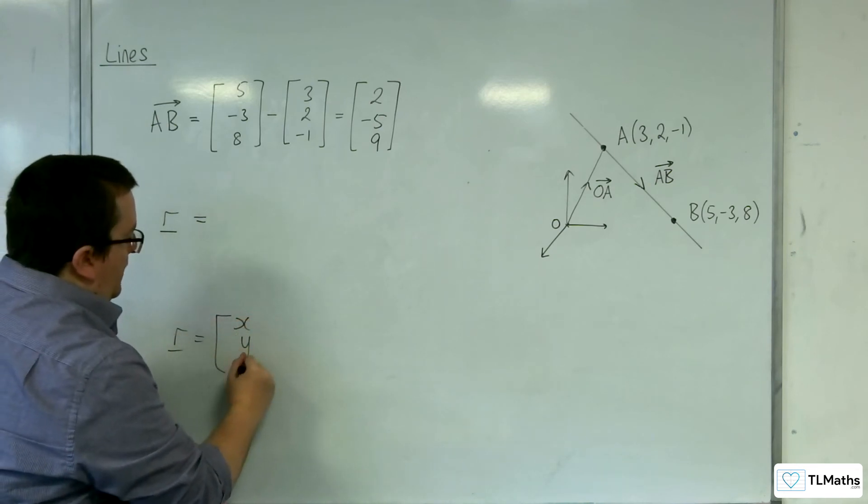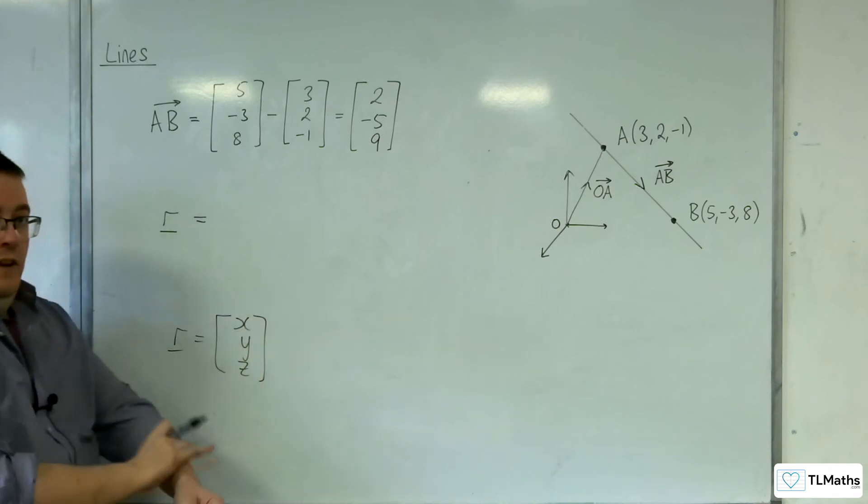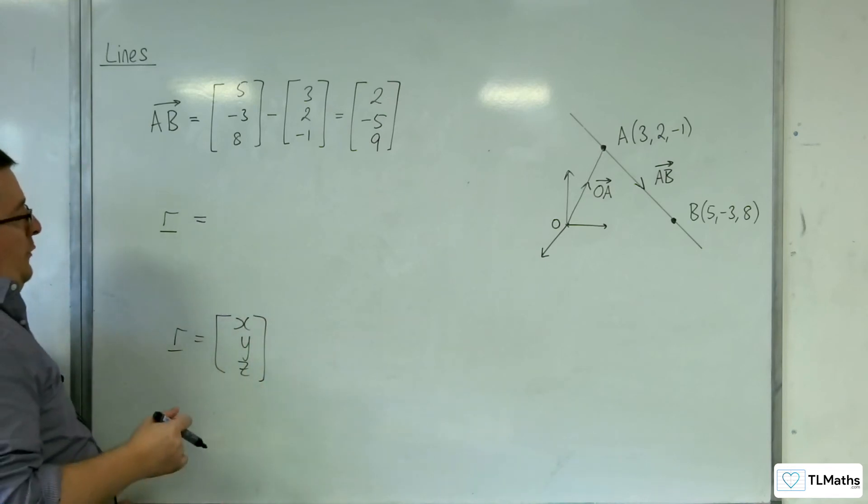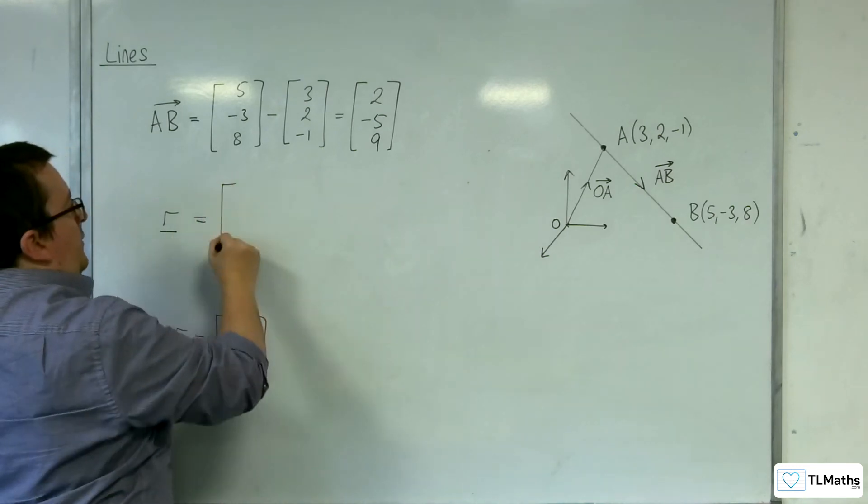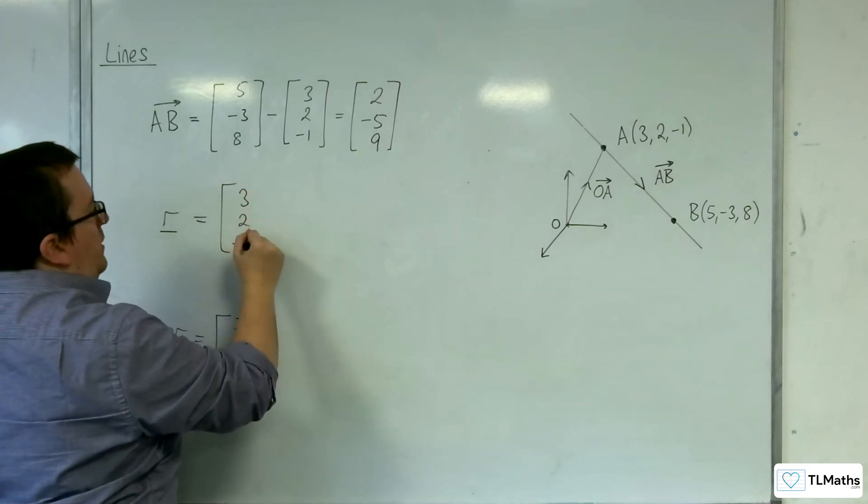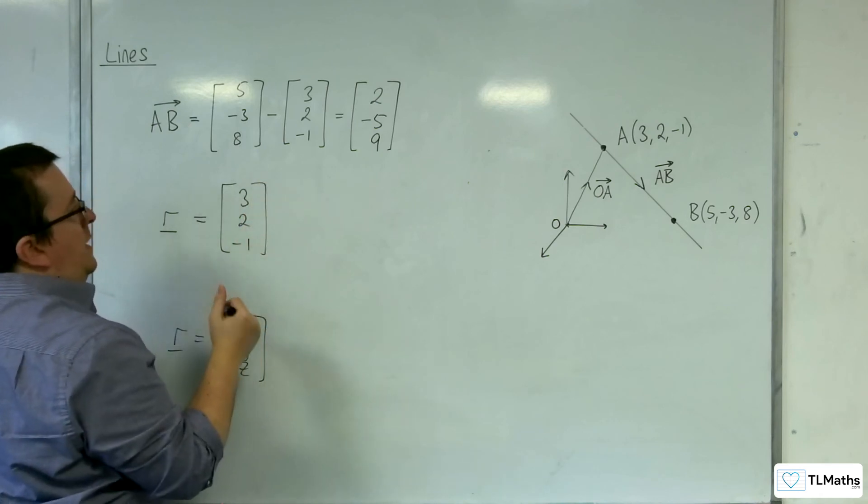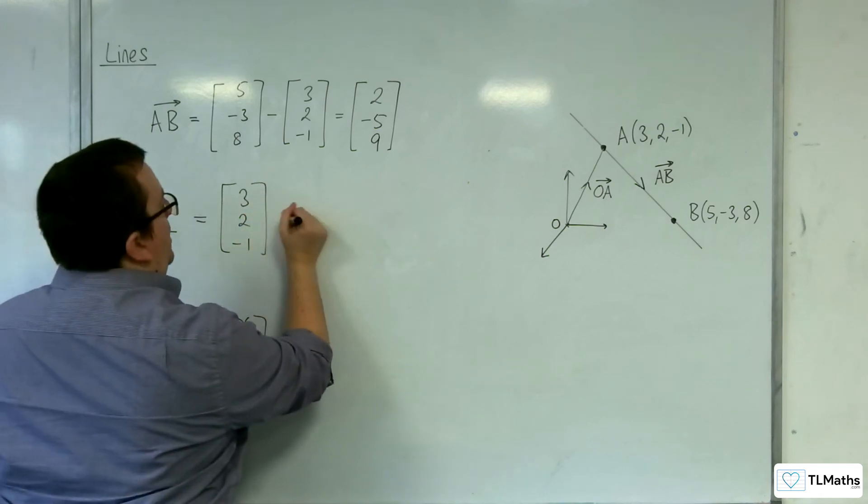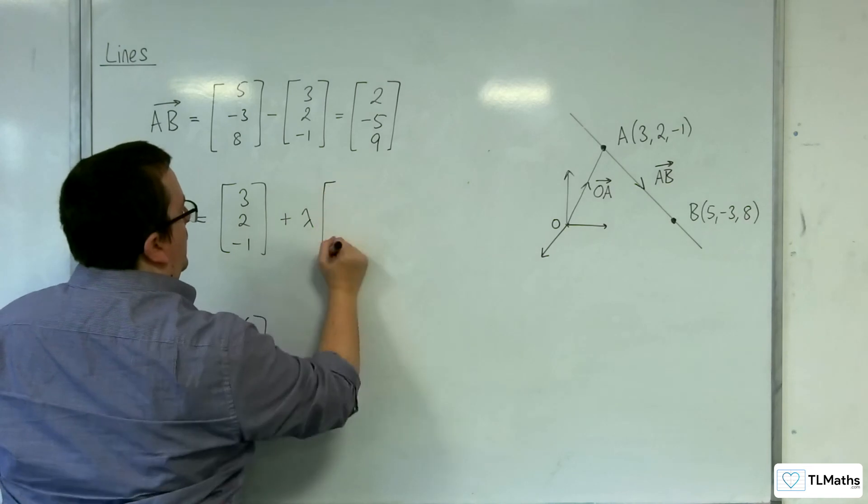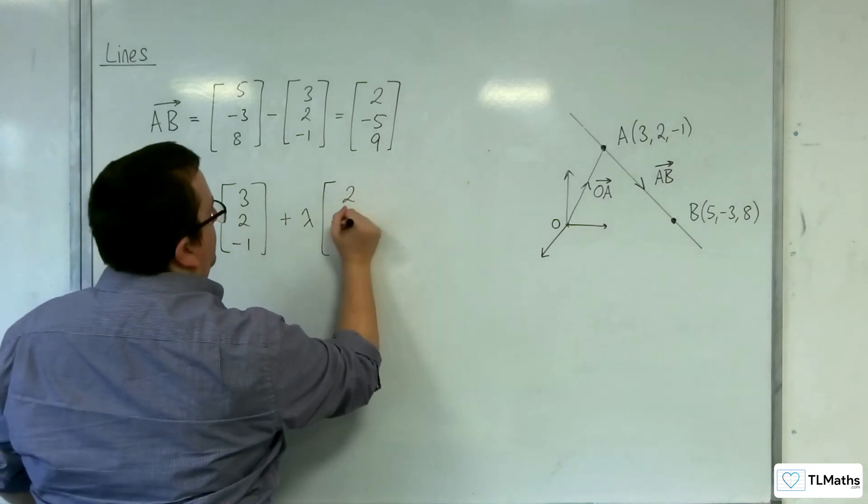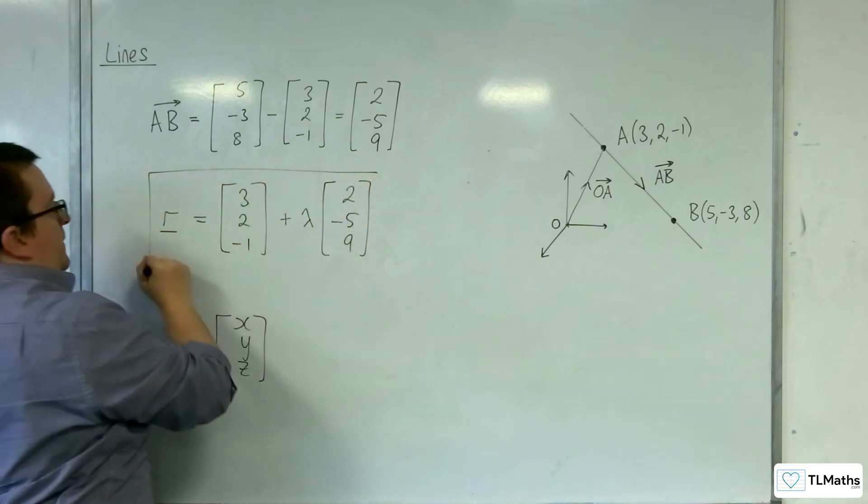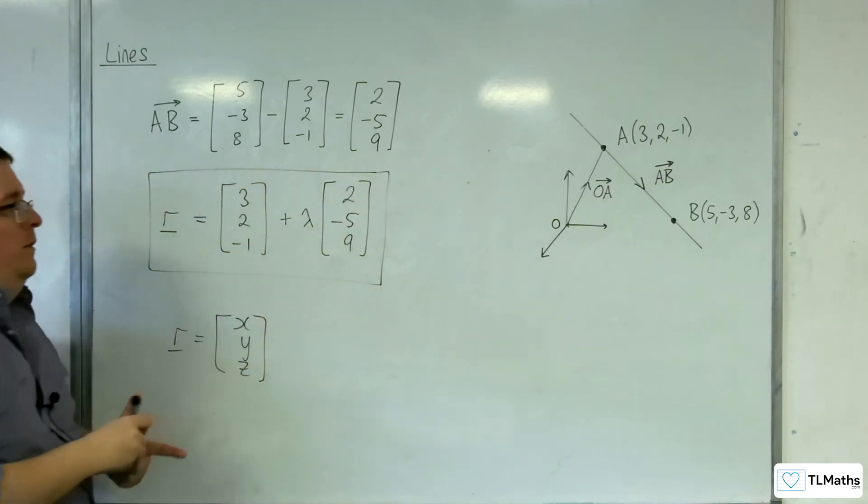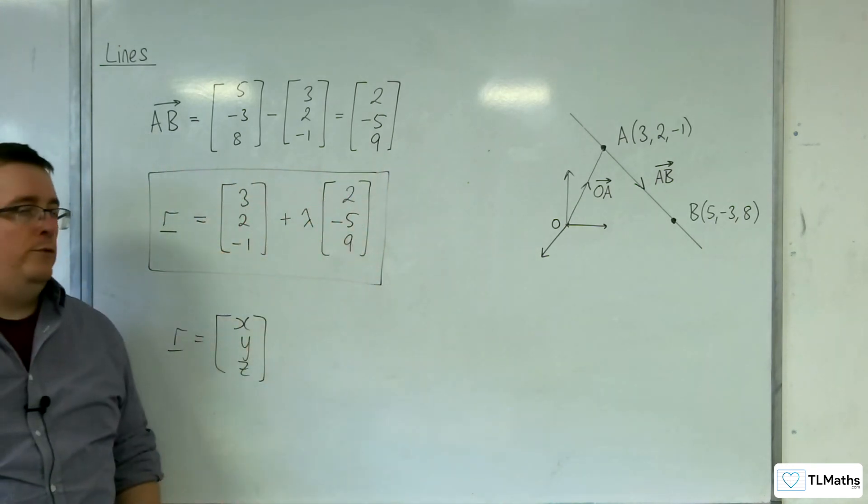The position vector of any point on the line. So you start off with your position vector OA to get you onto the line. So that would be 3, 2, minus 1. And then plus some multiple of AB. And that is the vector equation of the line going through those two coordinates.